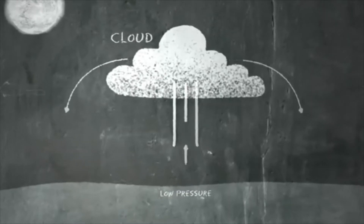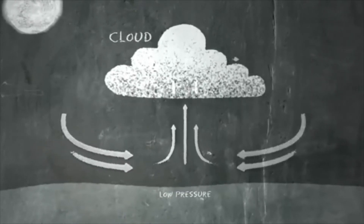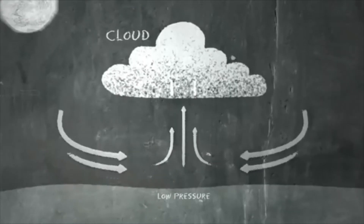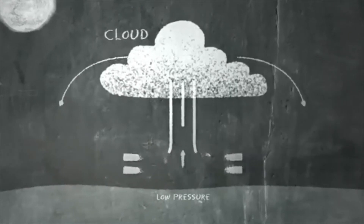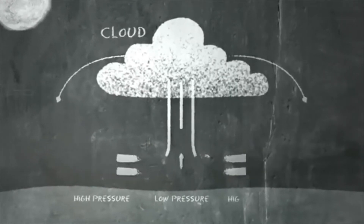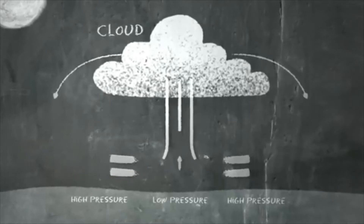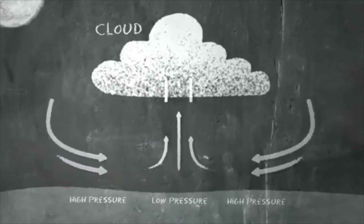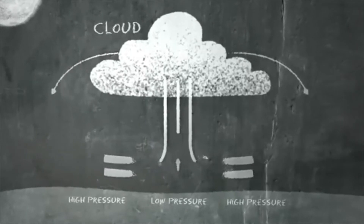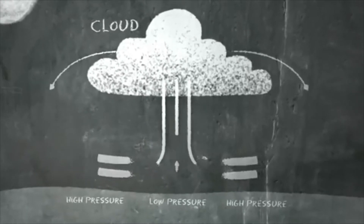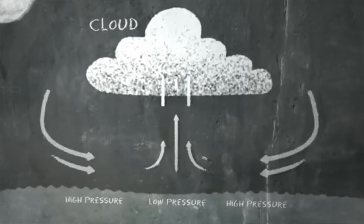The cooled air then sinks back down to the Earth's surface. Here, high pressure then prevails. On the Earth's surface, the air from the high-pressure area flows back to the low-pressure area and accelerates. This is where wind is generated.